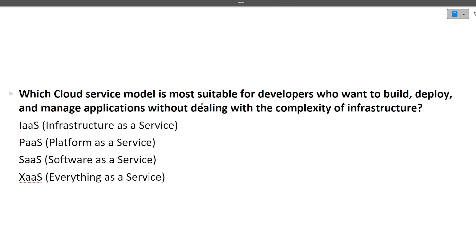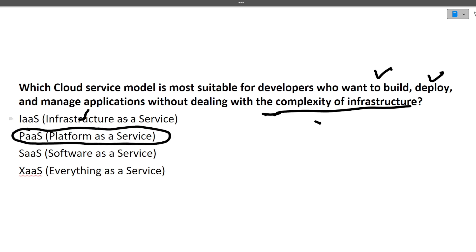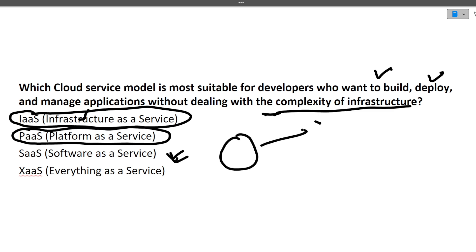The next question is: which cloud service model is most suitable for developers who want to build, deploy, and manage applications without dealing with the complexity of infrastructure? If you just want to build and deploy your product without worrying about the infrastructure, that type of service is known as Platform as a Service (PaaS). If you want to manage the infrastructure yourself, you use Infrastructure as a Service (IaaS). Software as a Service (SaaS) is where you build software and provide it to a company with ongoing support.